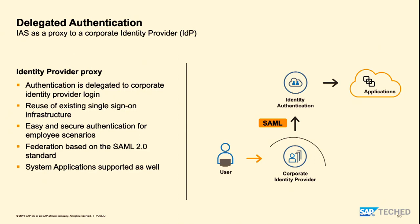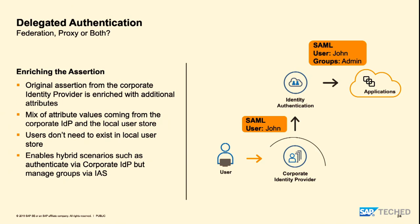The federation option allows us not only to use attributes from the corporate identity provider's user store, but also to enrich them with attributes coming from identity authentication service. We can get attributes using the provisioning service in identity authentication service, merge them, filter some, and send them to the application — this is how we enrich and add value on top of existing solutions.